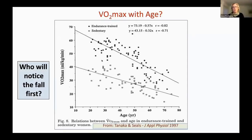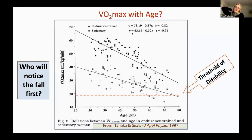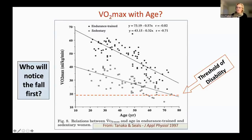Who notices the fall first? The endurance-trained group notices they can't do as much as they used to — their physiology is changing. The sedentary group, however, is just going about their daily lives not realizing their capacity is falling. That's significant because there's a threshold of disability, below which it's very hard for people to take care of themselves — to carry groceries or go upstairs — resulting in a loss of independence. In the sedentary group, many people cross that threshold in their 60s, whereas none of the endurance-trained people have crossed it, maintaining functional independence by training throughout their lives.